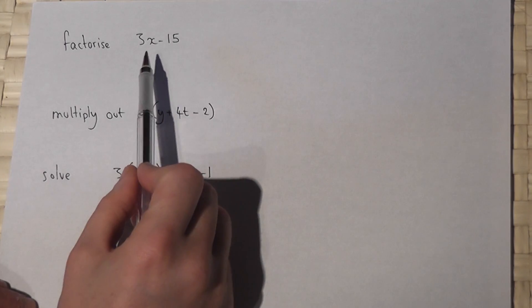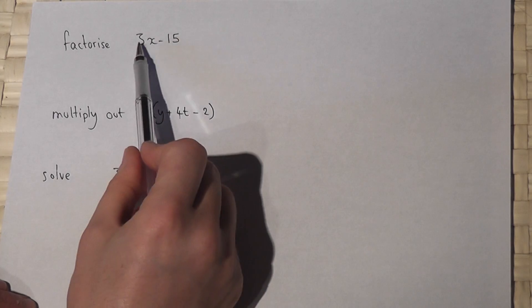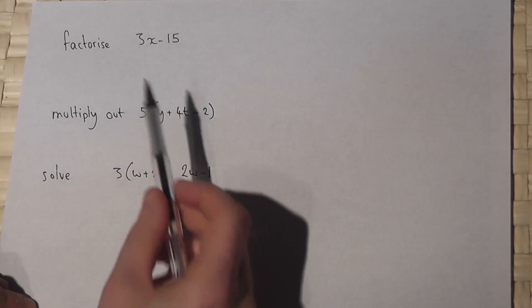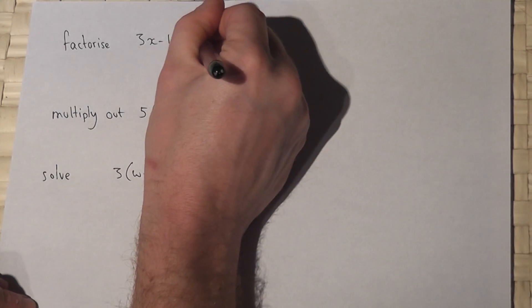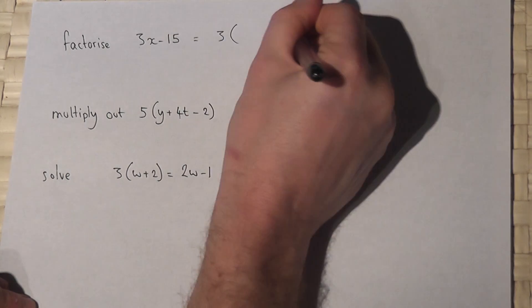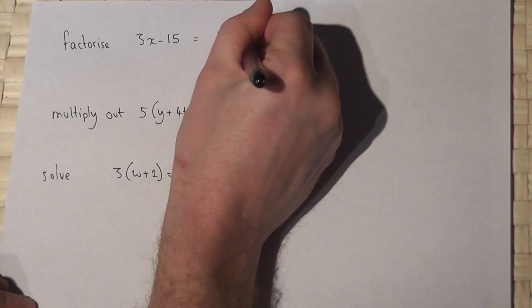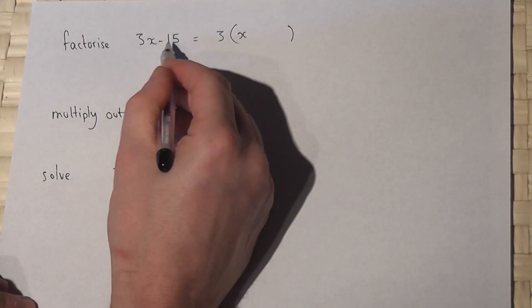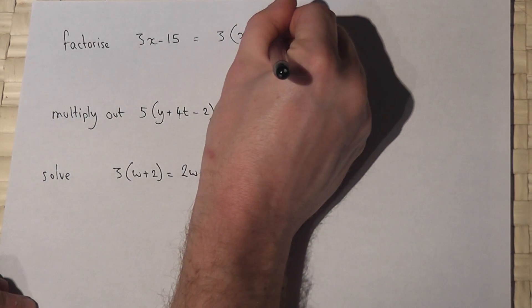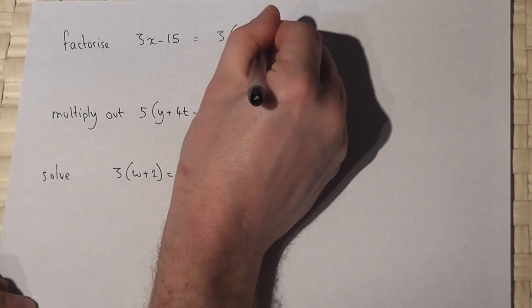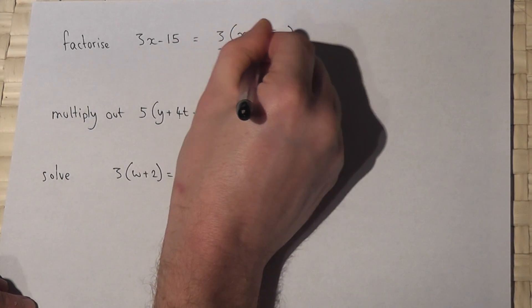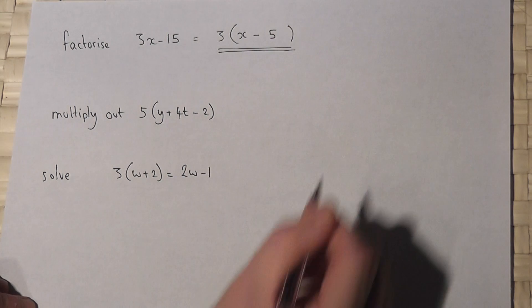To do this we look for a factor, the highest possible factor of both 3 and 15. Well 3 goes into 3 and 15, so I can write this as 3 bracket. 3 times what is 3x? Well 3 times x, and 3 times what is 15? 3 times 5, and it must be negative. So the answer is 3 bracket x minus 5.